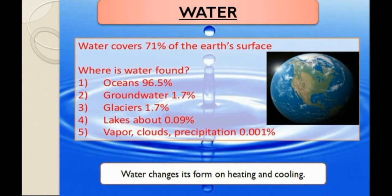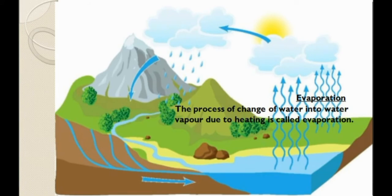About 71 percent of the earth's surface is covered with water — found in oceans, groundwater, glaciers, lakes, and as water vapor, clouds and precipitation in the environment. Water changes its form on heating and cooling. Evaporation is the process by which the sun slowly heats the water on the surface of the earth and changes it into water vapor. Evaporation takes place faster when there is a strong wind, a large water body, high surrounding temperature, or dry air.